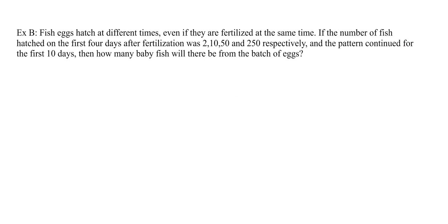So now we're going to apply it. Fish eggs hatch at different times, even if they're fertilized at the same time. So if the number of fish hatched on the first four days after fertilization was 2, 10, 50, and 250, respectively, and the pattern continued for the first 10 days, how many baby fish will there be from the batch of eggs? So we fertilize on the first day, and on the first day we get two hatchings. On the second day we're getting 10. The third day is 50. And the fourth day is 250.